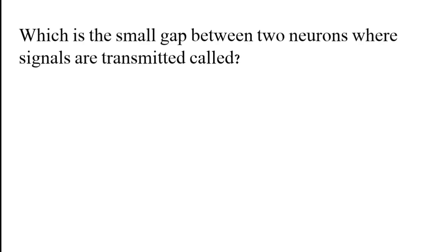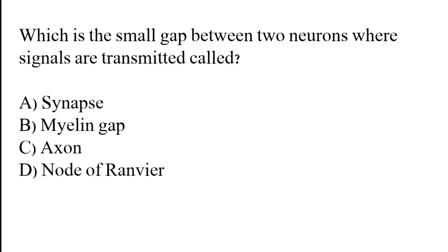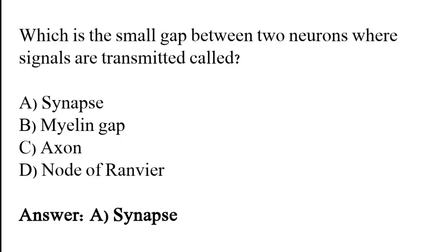What is the small gap between two neurons where signals are transmitted called? Options: Synapse, myelin gap, axon, node of Ranvier. The correct answer is option A. The small gap between two neurons where signals are transmitted is called the synapse.